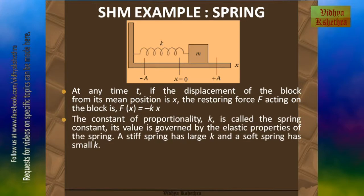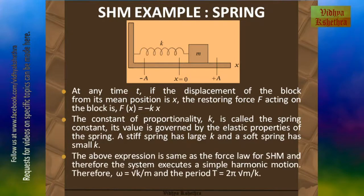The constant of proportionality k is called the spring constant. Its value is governed by the elastic properties of the spring — a stiff spring has large k and a soft spring has small k. This expression is the same as the force law for simple harmonic motion, and therefore the system executes simple harmonic motion. Therefore, the angular velocity omega is equal to the square root of k by m, and the period T is equal to 2π times the square root of m by k, where m is the mass attached to the spring and k is the spring constant.